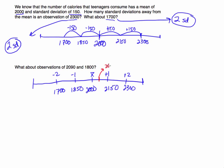2,090 is going to be approximately right here. And 1,800 is going to be less than 1,850, so that's going to be like right here — approximately 1,800. So let's focus on 2,090. If I'm asking how many standard deviations away is 2,090, I know immediately it's going to be less than 1, because if I was 1 standard deviation away I would be at 2,150. So I'm less than 1 standard deviation. Well, what is this distance? How far is 2,090 from the mean? To get that, I can just subtract: 2,090 minus the mean of 2,000 — I get 90.